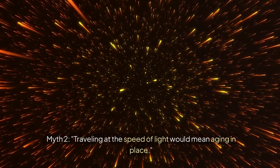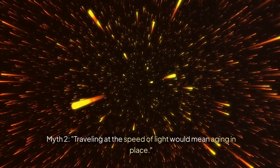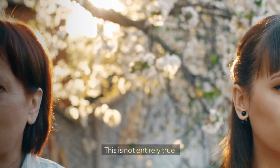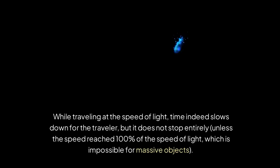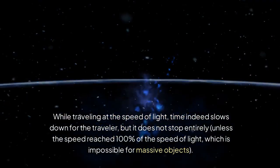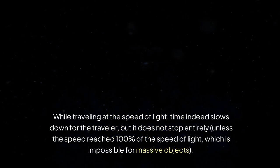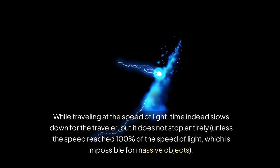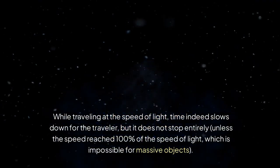Myth 2: Travelling at the speed of light would mean aging in place. This is not entirely true. While travelling at the speed of light, time indeed slows down for the traveller, but it does not stop entirely, unless the speed reached 100% of the speed of light, which is impossible for massive objects.